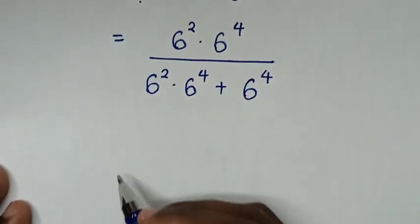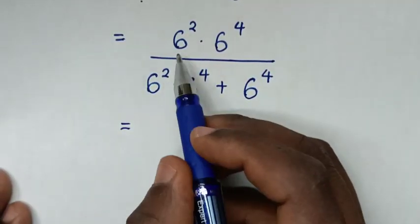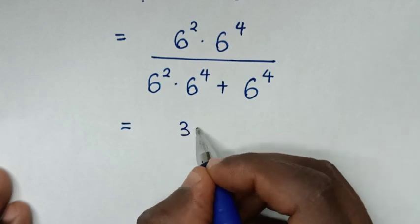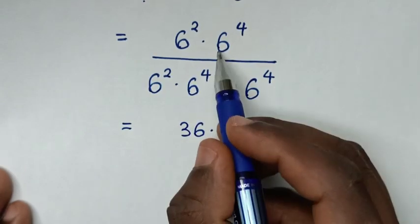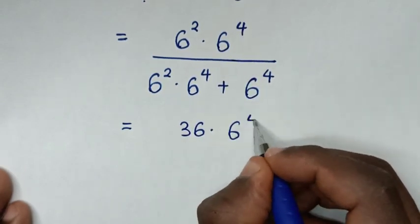Then in the next step, it will be equal to 6 square is 36, then times this 6 power 4, over: